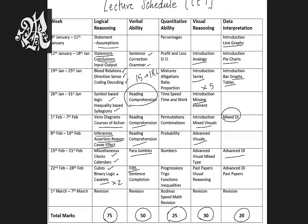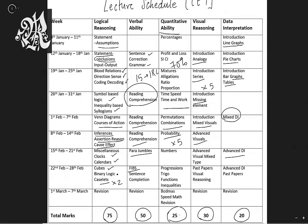In quant, you have arithmetic topics — percentage, profit and loss, SI, CI, mixtures, allegation, ratio, time-speed, time-work — which will constitute around 70% of the paper. Probability, permutation, and combination will be asked for at least five questions. Numbers, progression, higher math, etc. can be asked for around another five questions. Board marks and speed math are sometimes asked directly as well.